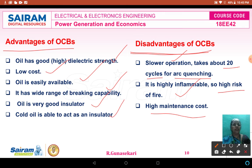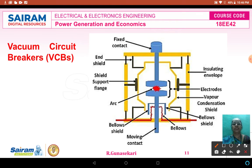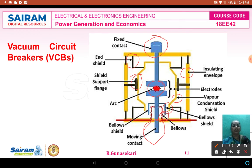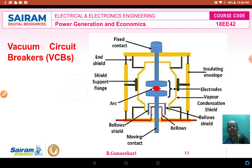We studied about the vacuum circuit breaker (VCB). The vacuum circuit breaker diagram shows: a fixed contact, a moving contact, an end shield, an insulating envelope, a shielding support, a bellows shield, bellows, and a vapor condensation shield. The arc is produced in between the moving contact and the fixed contact. The arc is extinguished when the contacts separate — this is the basic principle of the circuit breaker.